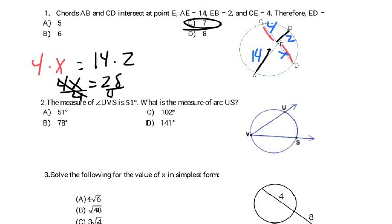And number 2, again label. It says uvs is 51. And you want to find the arc us. You just multiply it by 2 and get c again for 102.